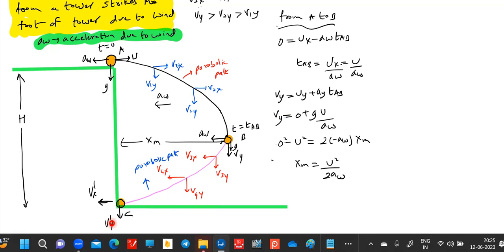So zero squared, then the Aw is acting opposite initial velocity, so negative sign. And when it moves from A to B, what is the horizontal displacement? Xm. So we call this Xm, the maximum horizontal displacement.